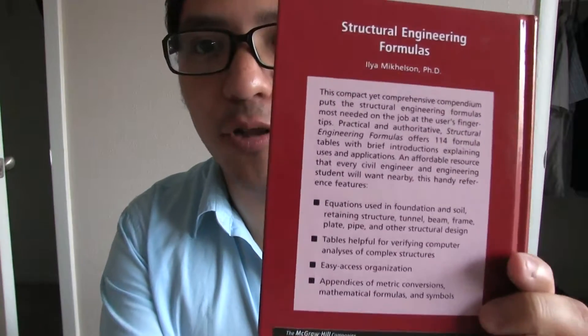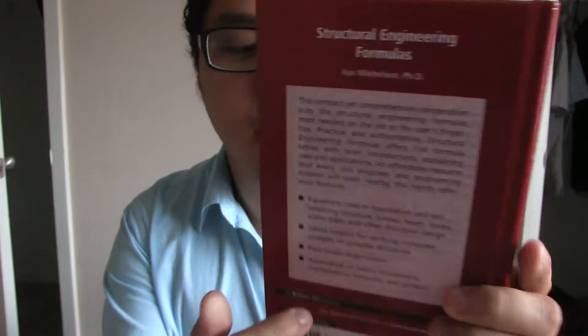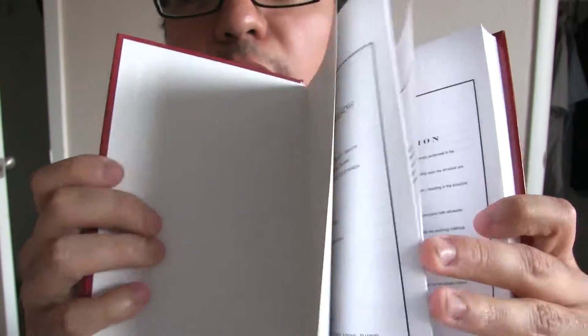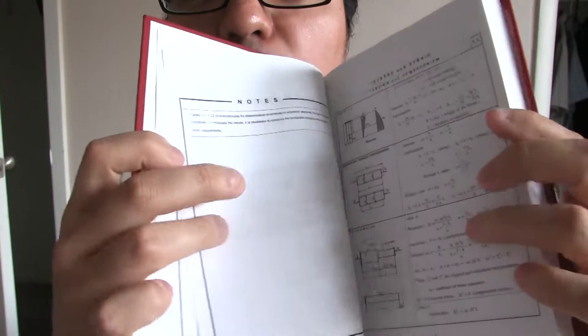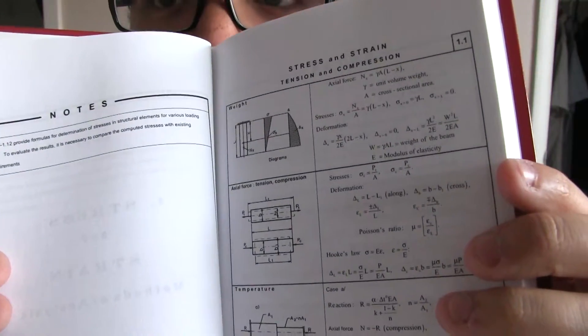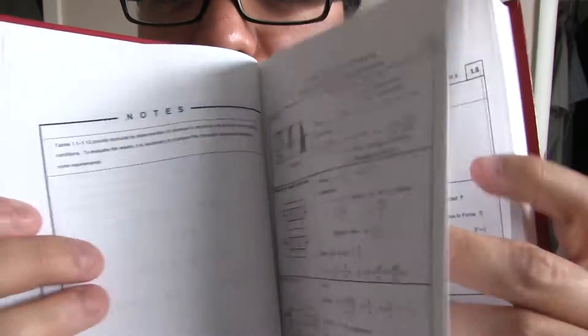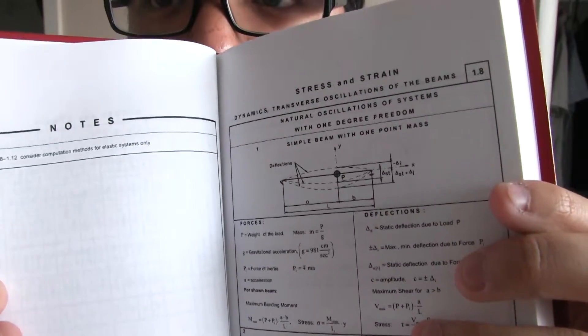It basically has formulas for everything. So let's go over it a little bit. If you look at it, you're going to see the formula for whatever you want, like for example, for tension and compression, for stress and strain.